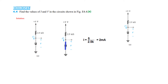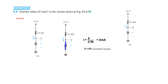Straight away we can conclude that the voltage is connected to ground, so voltage will be 0. The current will be 5 divided by 2.5, which equals 2 milliampere. And as mentioned, voltage is 0 volt.